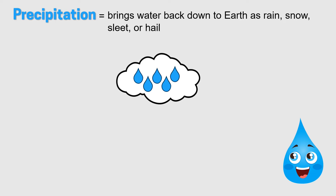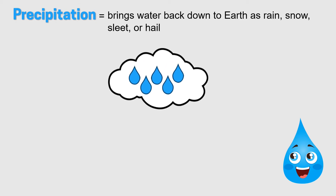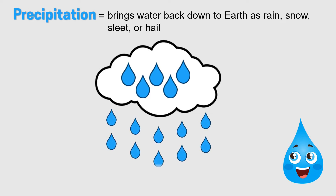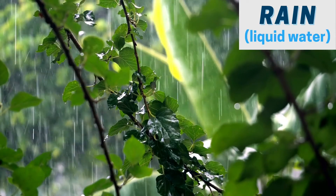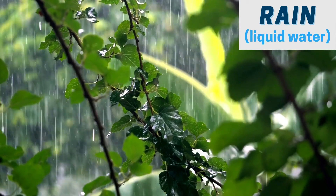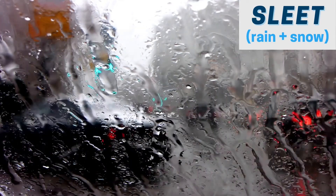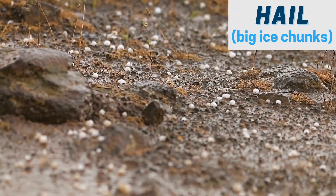Third is precipitation. Precipitation occurs when so much water has condensed that the air cannot hold it anymore. The tiny droplets that make clouds combine with each other and grow into bigger water droplets. When these droplets get so heavy that they can no longer float in the air, the water falls back down to earth in the form of precipitation. There are many types of precipitation, such as rain, which is liquid water; snow, which is frozen water; sleet, which is a combination of both rain and snow; and hail, which are big pieces of ice.